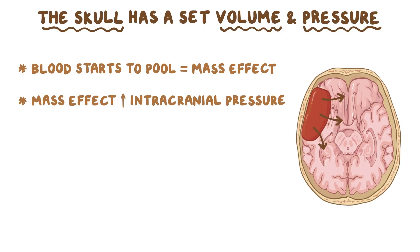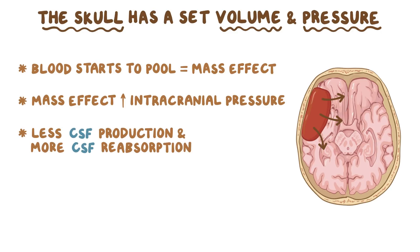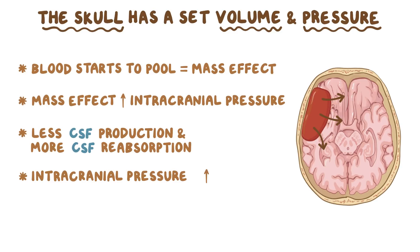To help reduce the volume and pressure back to normal, there is less CSF production and more CSF reabsorption. Over time, if the arterial bleed continues, it might overwhelm the body's ability to compensate and the intracranial pressure could start to get quite high, and that can lead to a brain herniation.